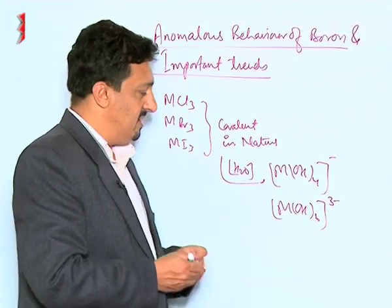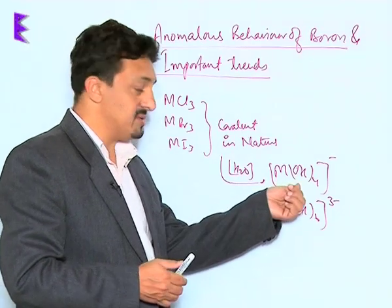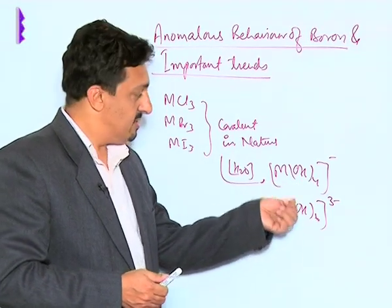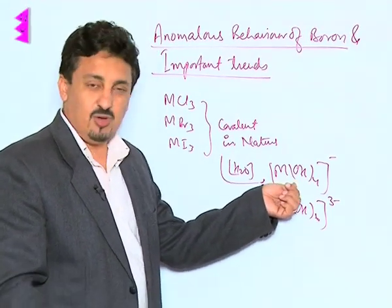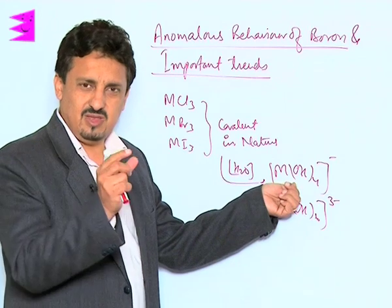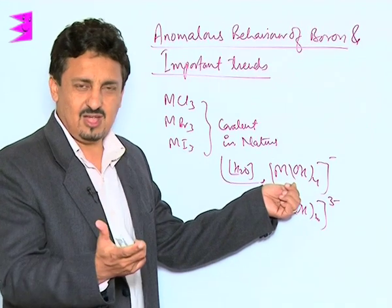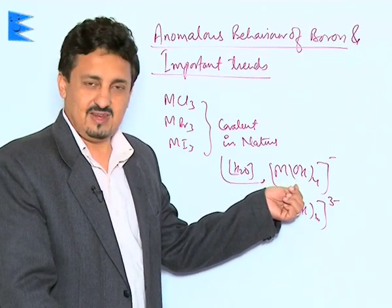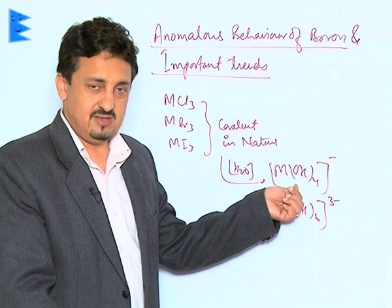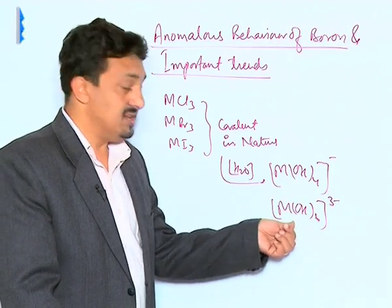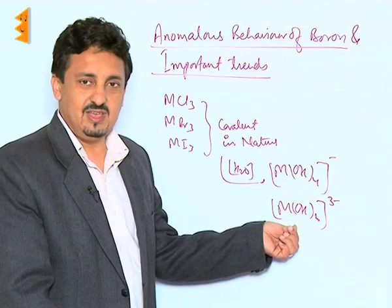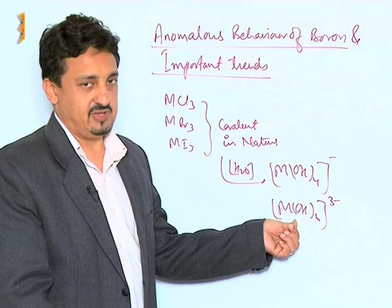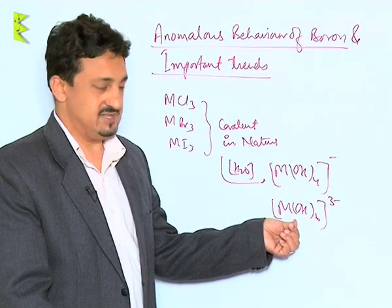They form tetrahydroxide units and hexahydroxide units. Boron, being the smallest element and lacking d-orbitals, prefers to form tetrahydroxide ions, whereas all the rest of the elements get hydrolyzed to form the hexahydroxide species.